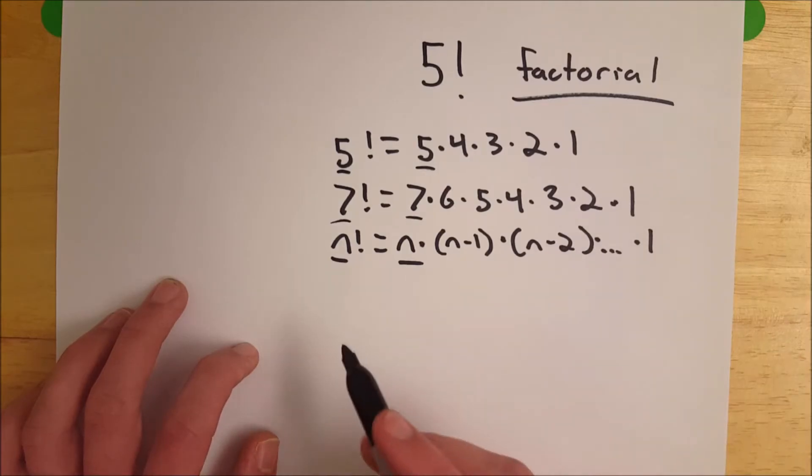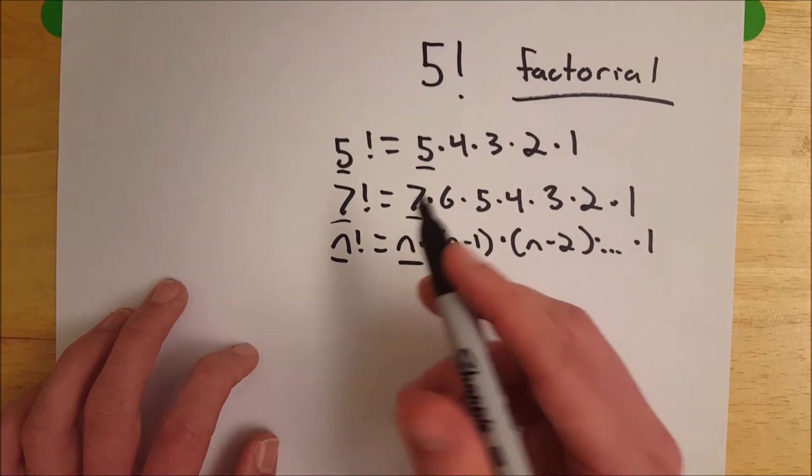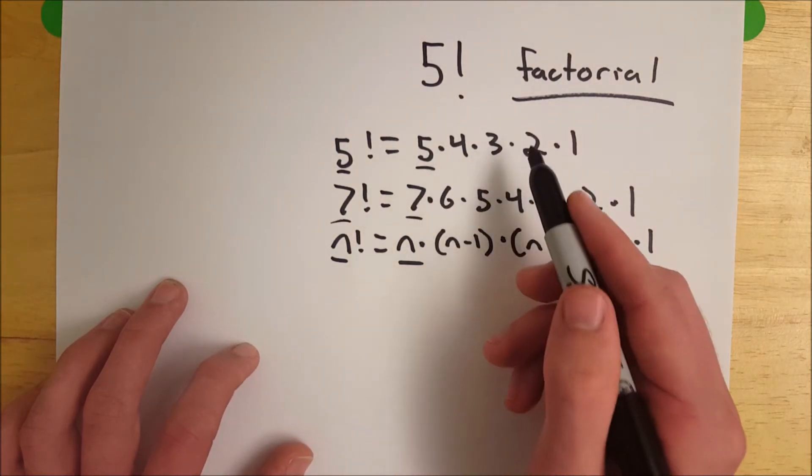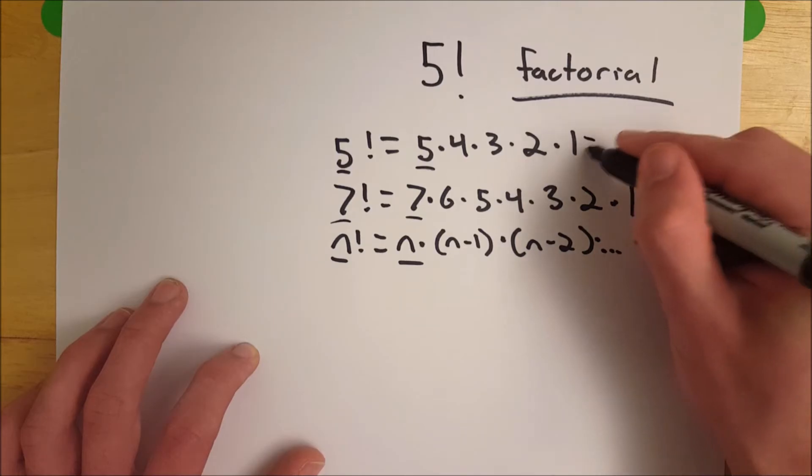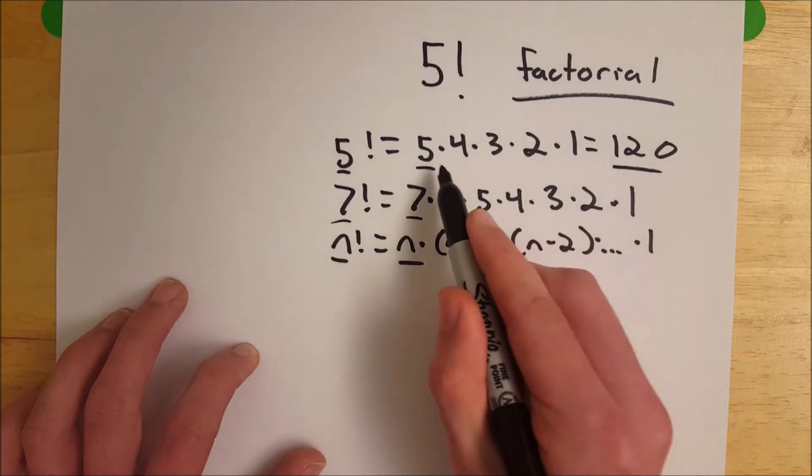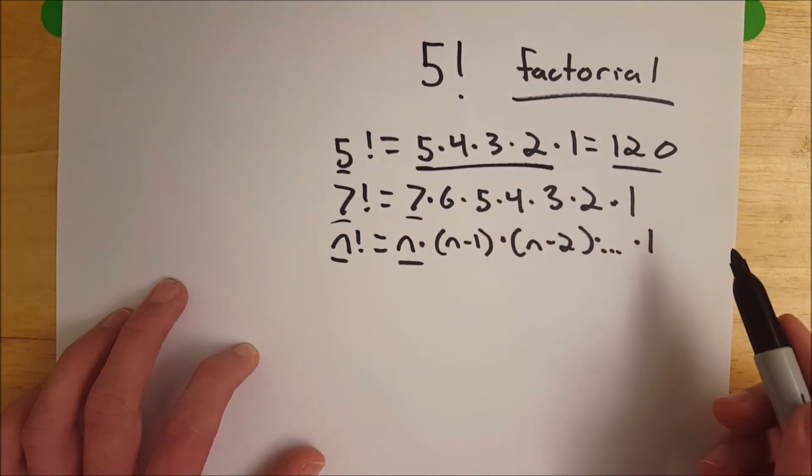So let's compute this one real quick just so you get a feel for that. So five times four is 20, times three is 60, times two is 120, times one is 120. So five factorial is equal to 120, which is equal to the product of all those numbers.